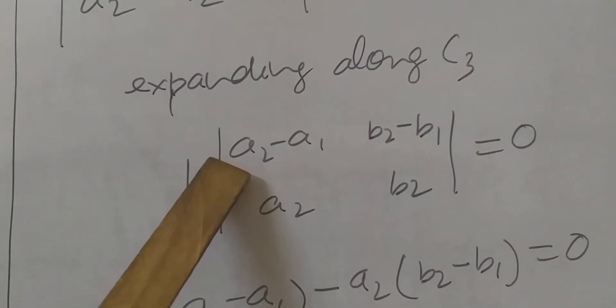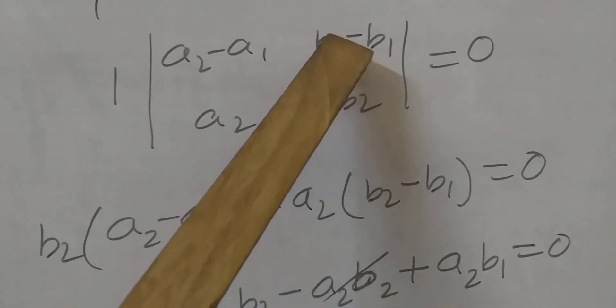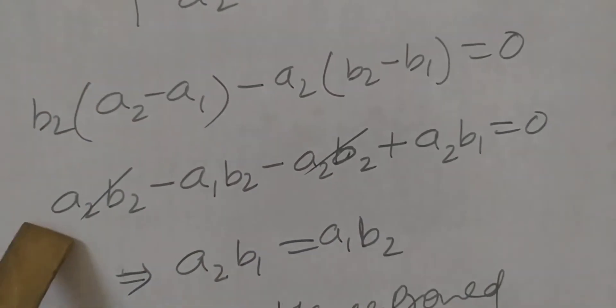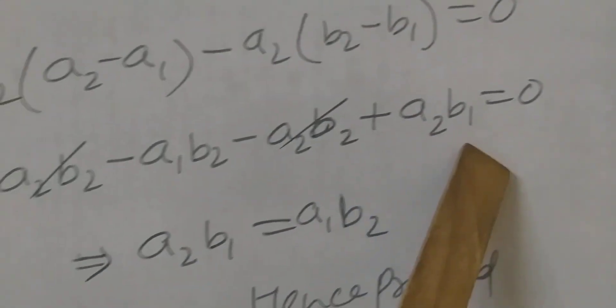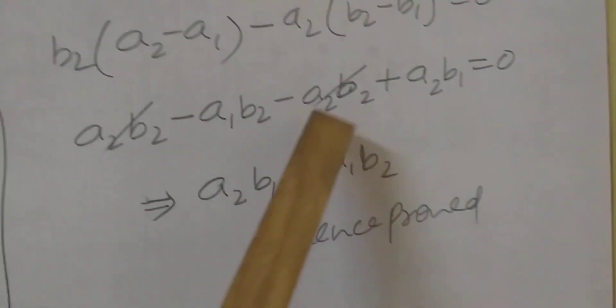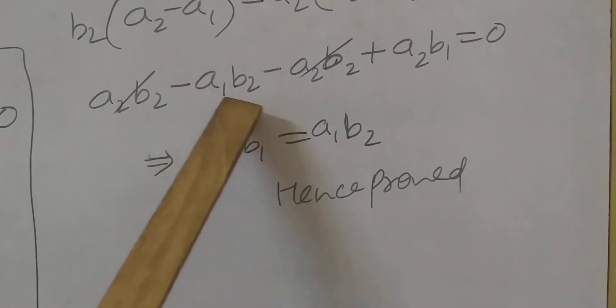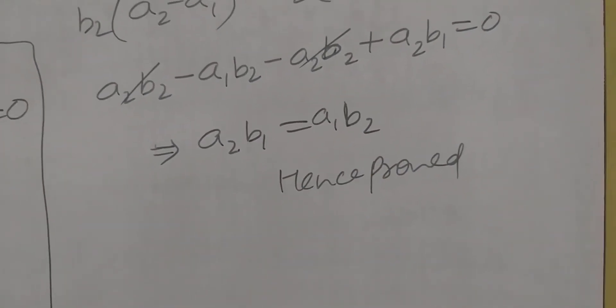Now there are two zeros in column 3, so expand along C3. The element 1 at position A13 remains; its row and column deleted leave the 2×2 determinant: a2-a1, a2; b2-b1, b2. Multiplying: b2(a2 - a1) - a2(b2 - b1) = a2·b2 - a1·b2 - a2·b2 + a2·b1. The a2·b2 terms cancel, leaving: -a1·b2 + a2·b1 = 0, so a2·b1 = a1·b2. Hence proved.